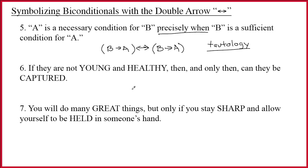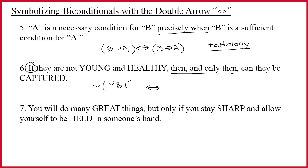Sentence six: 'If they're not young and healthy, then and only then can they be captured.' When 'if' goes with 'then and only then,' this is a synonym for the double arrow. The double arrow sits at the 'then and only then,' so in front of it we have 'not young and healthy.' Not an especially difficult sentence — it's just about knowing the synonyms.